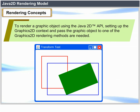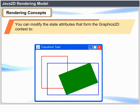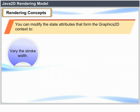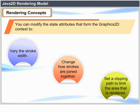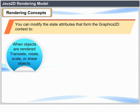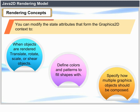Rendering Concepts: To render a graphics object using the Java 2D API, you set up the Graphics2D context and pass the graphics object to one of the Graphics2D rendering methods. You can also modify state attributes — vary the stroke width, change how strokes are joined, set a clipping path to limit the area rendered, and when objects are rendered, translate, rotate, scale or shear objects, define colors and patterns to fill shapes, and specify how multiple Graphics objects should be composed.